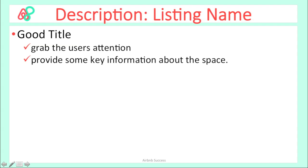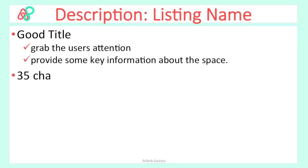A good title should accomplish two goals: grab user attention and provide key information about the space. I've seen many titles that include either the city name or the particular neighborhood — these are both improper use of the title, because both city and neighborhood are already displayed in the search results. You only have 35 characters for the listing name, so think about the key quality that might attract guests.